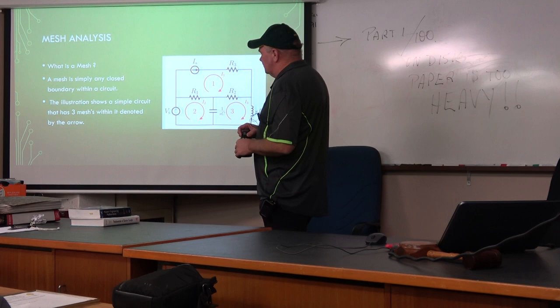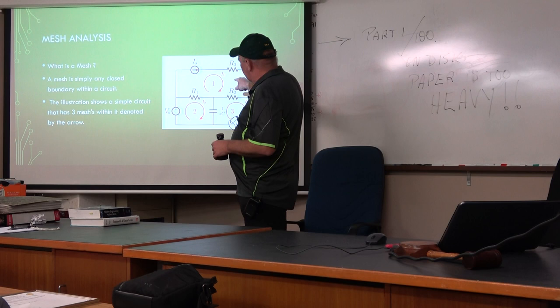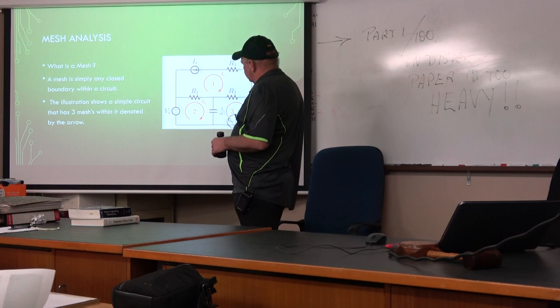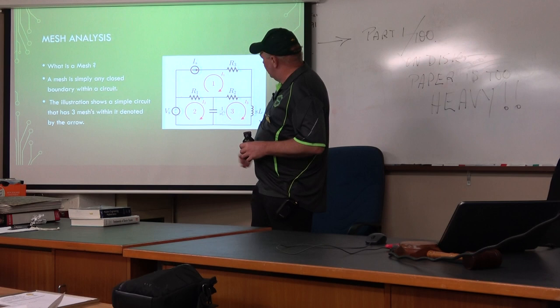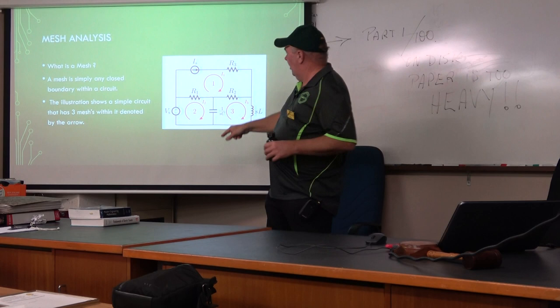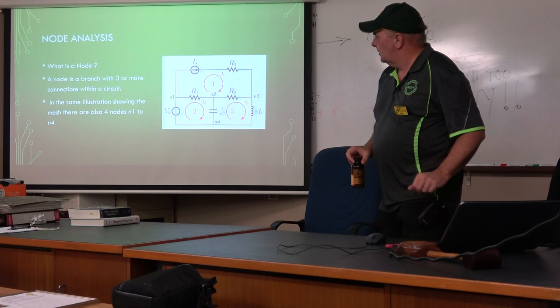Mesh analysis. What is a mesh? A mesh is simply a closed boundary within a circuit. In a simple circuit here there are three meshes — they're just boundaries. There will usually always be a voltage source or a current source. There can be any sort of inductors, capacitors, or coils; there could even be active components such as certain ICs, transistors, or diodes. In some of the larger circuits there could be anything up to three or four thousand meshes, depending on the size of the circuit.